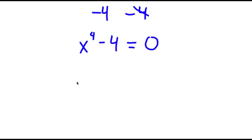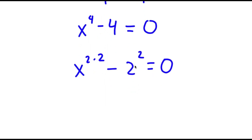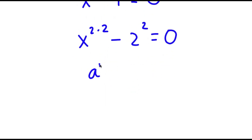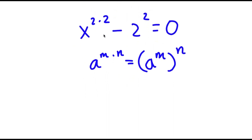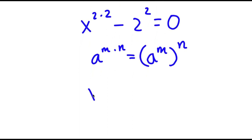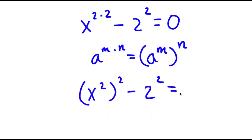Now x to the power of 4 I can rewrite as x to the power of 2 times 2, and 4 I can rewrite as 2 squared. If I have something in the form a to the power of m times n, this is equal to a to the power of m to the power of n. So x to the power of 2 times 2 equals x to the power of 2 to the power of 2. Now I have this minus 2 squared is equal to 0.